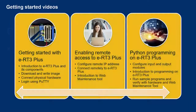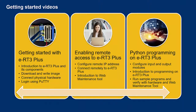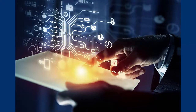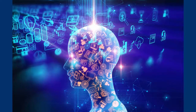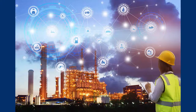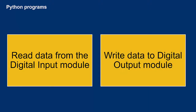In this video we demonstrate how to write Python code on ERT3 Plus and write basic read/write programs to communicate with the IO modules. Once you are familiar with these basics, you will be able to communicate with any IO device connected to the base module. Additionally, running Python code enables you to develop and implement AI algorithms on ERT3 Plus. We show you how to write two programs: the first reads data from the digital input module and the second writes data to the digital output module.